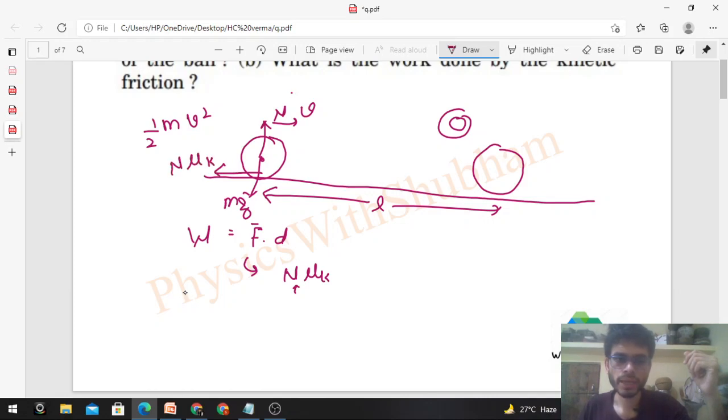N into mu k. But here mu k is not given. So we cannot find out the work by the basic definition of the work. The work kaise nikaal sakte? By work energy theorem.